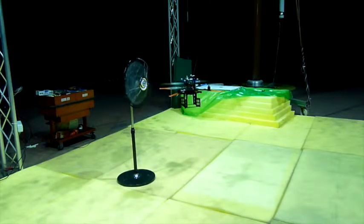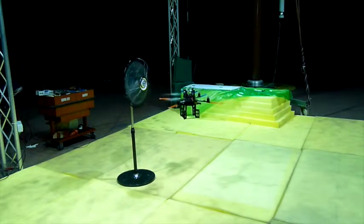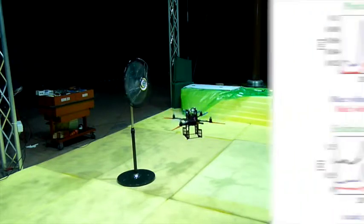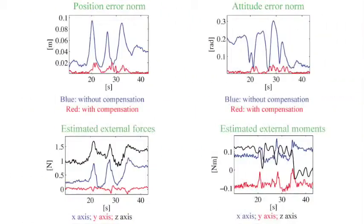Performance can be recovered by compensating with the external generalized forces estimator. In the external forces and moments plots, it is possible to notice the passages in front of the fan.